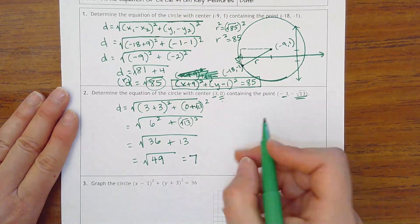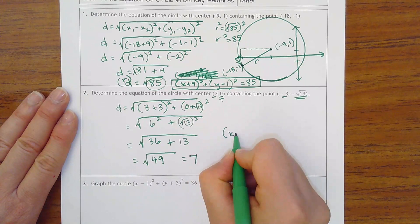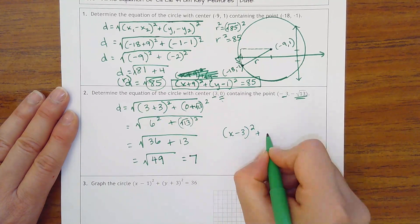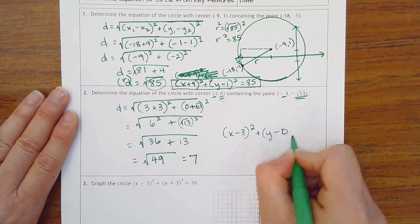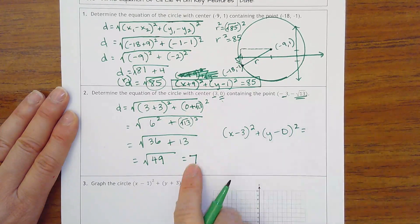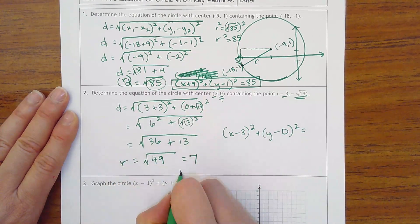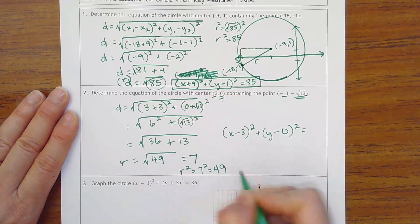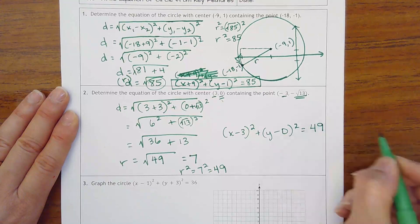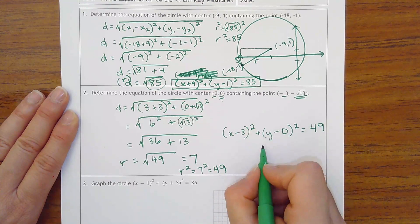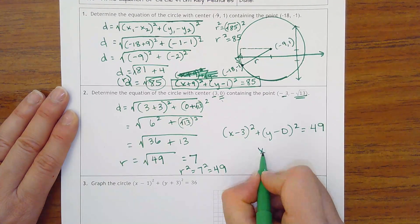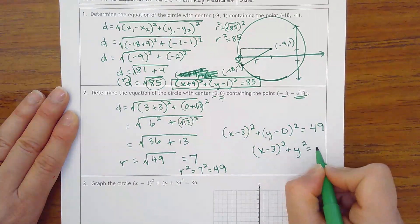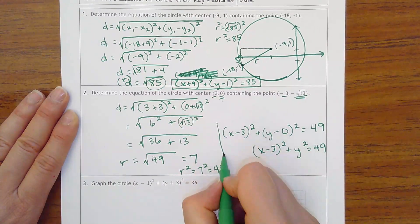So then if I want to write my equation, it's going to be (x - 3) from my center squared, plus (y - 0) squared equals the radius squared. So radius squared would be 7 squared, which is 49. And again you would not have to have y minus 0, you could just have y squared. So either one of these.